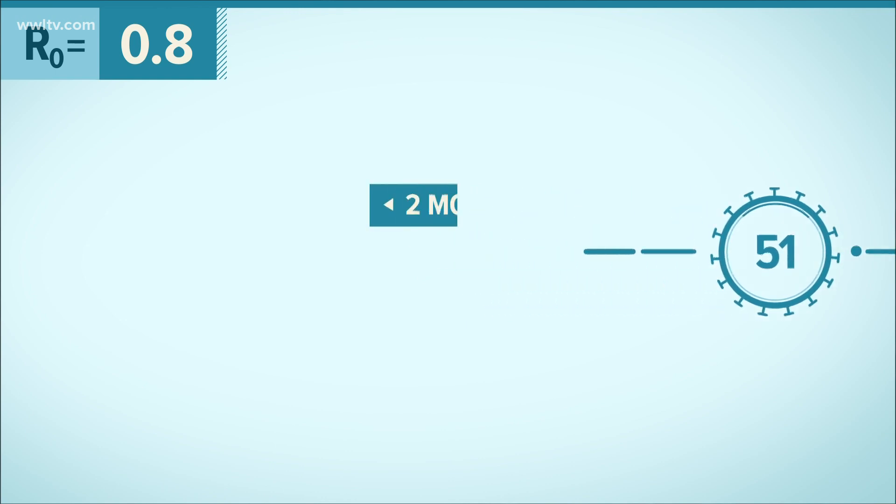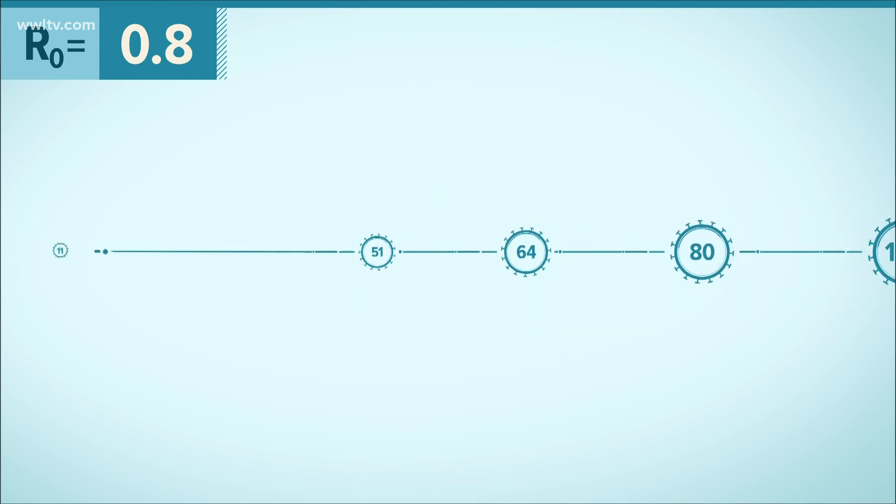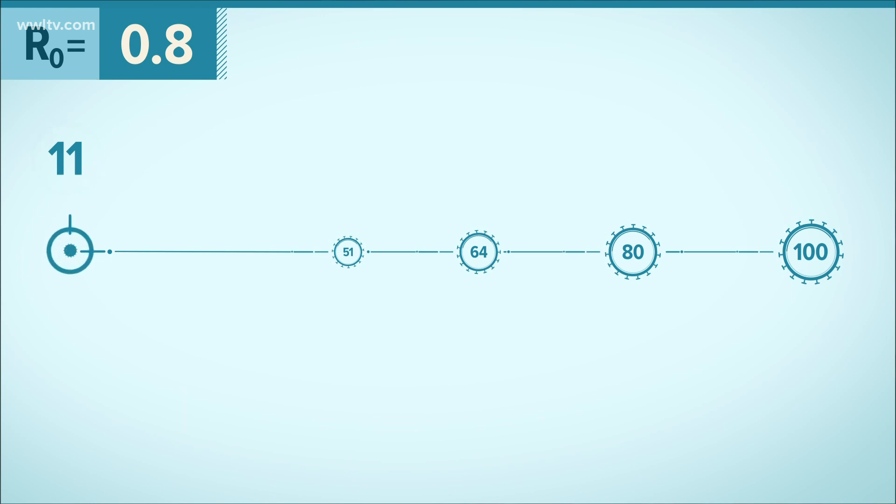So after about two months, the number of newly infected people would fall from 100 to 11. In a little over two months' time, it's all but vanished.